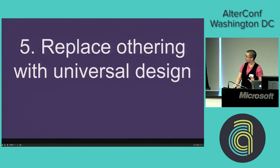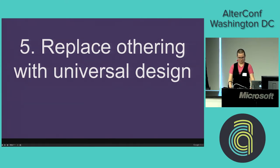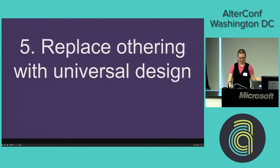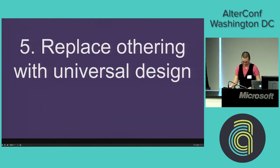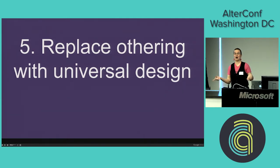Finally, step number five is to replace othering with universal design. This comes from the disability justice community, and it's not just for trans people — it's for everyone. For example, ask for pronouns on everyone's name badge — that normalizes providing pronouns. Avoid honorifics like Ms., Mr., or Mrs. unless they're absolutely necessary; you can usually get away these days with 'Dear [first name].' Make it very easy to update your data in those contexts without having to talk to a human.